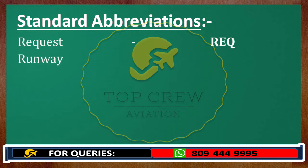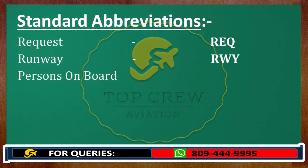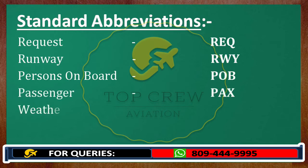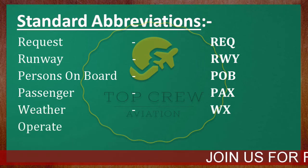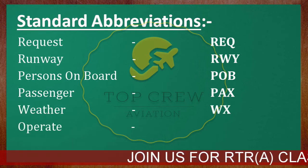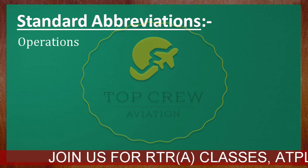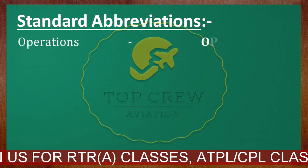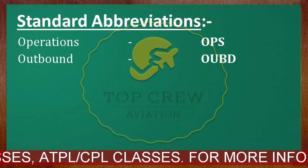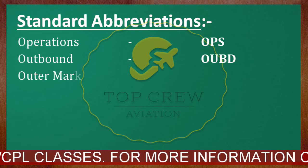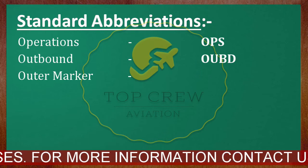Runway — RWY. Persons On Board — POB. Passenger — PAX. Weather — WX. Operate — OPR. Operations — OPS. Outbound — OUBD. Outer Marker — OM. Monitor — MNT.